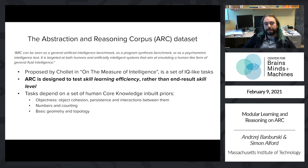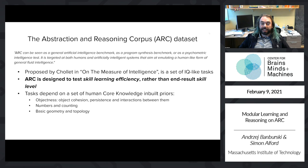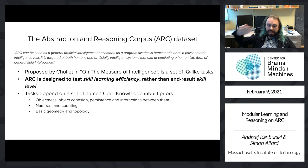ARC is from the 'On the Measure of Intelligence' paper. It's a general artificial intelligence benchmark, a program synthesis benchmark, and a psychometric intelligence test, targeted at both humans and intelligent systems. Chollet proposed it as a set of IQ-like tasks meant to measure skill learning efficiency rather than skill level, and he clearly identified a set of core knowledge priors responsible for doing well on this dataset.